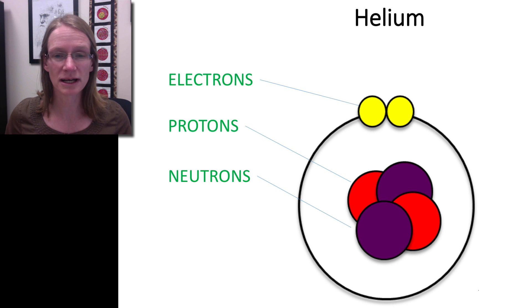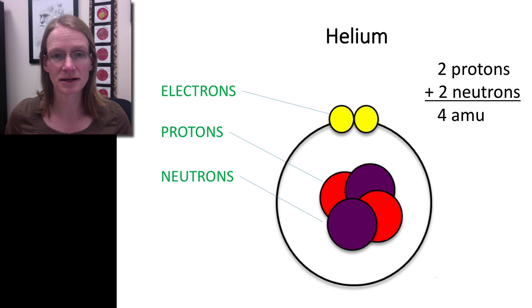If we remember that protons and neutrons each weigh one atomic mass unit, then with this particular atom of helium we have two protons and two neutrons, which are each two amu, so the total mass of this atom is about four amu.